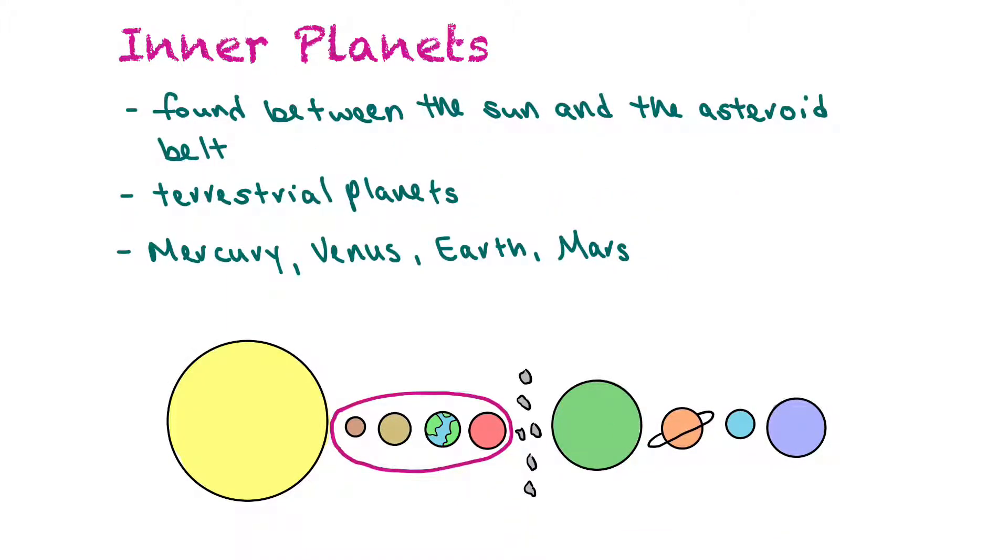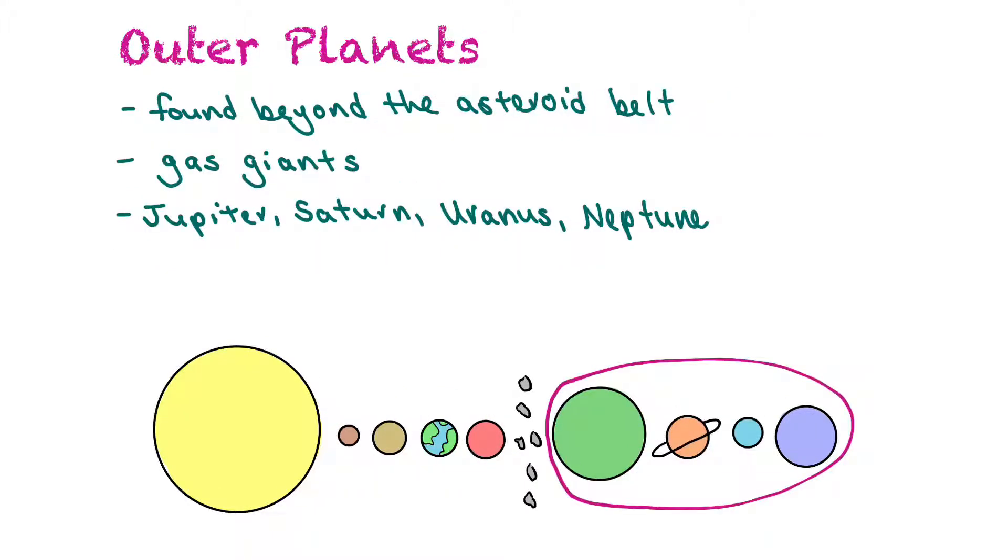The inner planets are found between the Sun and the asteroid belt, and they are terrestrial planets: Mercury, Venus, Earth, and Mars. The outer planets are the planets that are found beyond the asteroid belt, and they are all gas giants: Jupiter, Saturn, Uranus, and Neptune.